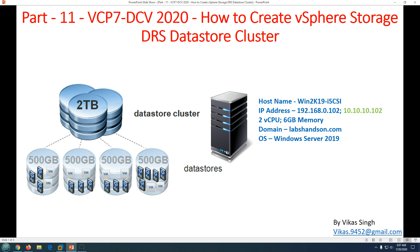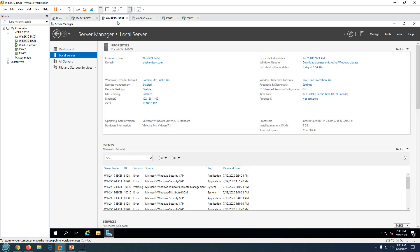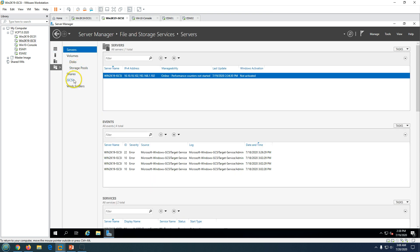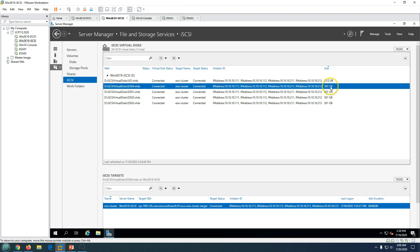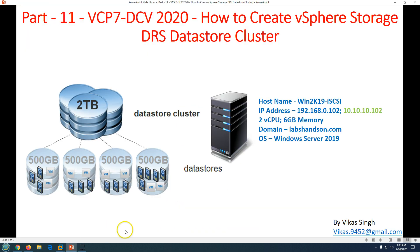In this lab environment we have an iSCSI server providing LUNs to our ESXi hosts. We configured this iSCSI host in previous videos where we created a few LUNs and mapped them to our ESXi hosts. This is a Windows Server 2019 iSCSI server — essentially a storage server. If we go to Files and Storage and then to iSCSI, you can see we have four 500 GB disks connected with the ESXi cluster. These four storage volumes are connected to our ESXi hosts, and we will create datastores on them.